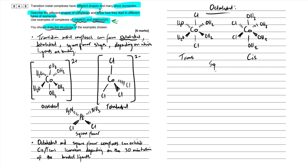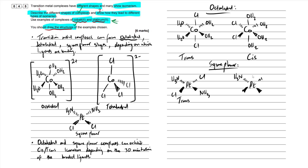Next, cis-trans isomerism in square planar complexes using cisplatin and transplatin. For the trans isomer, chloride is on one side and on the opposite side of the platinum, with NH₃ filling the other two positions. For the cis isomer, both chlorides are on the same side and both ammonias on the other side. Label these as trans and cis isomers respectively.